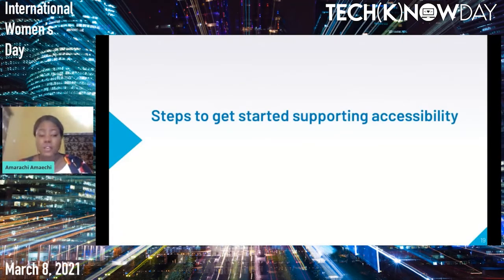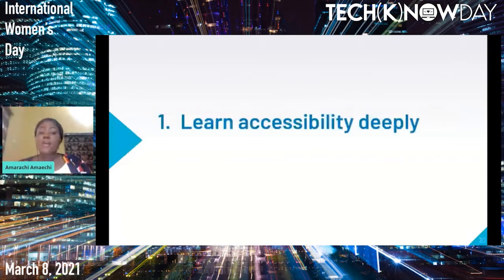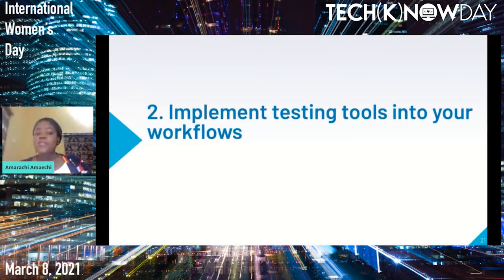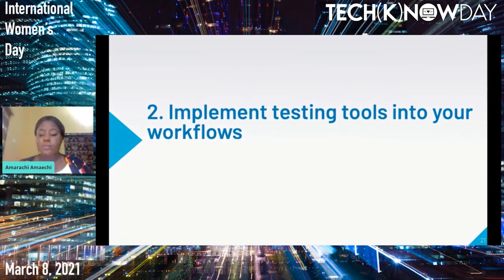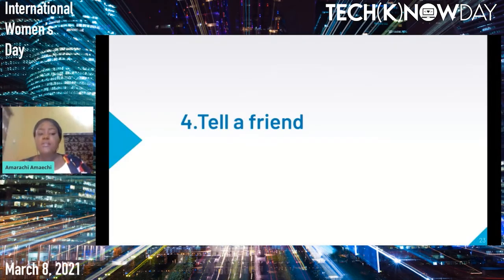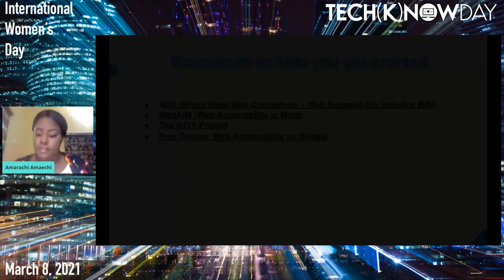Because of time, let's quickly look at steps to get started supporting accessibility. One: learn accessibility deeply — after this talk, take time to learn it thoroughly. Two: implement testing tools into your workflow. Three: user testing is the best testing. Four: tell your friends about accessibility. Five: repeat the process.